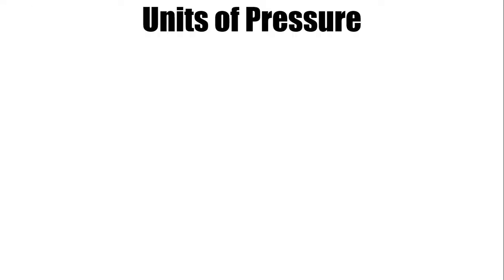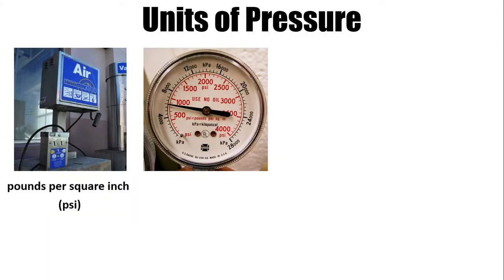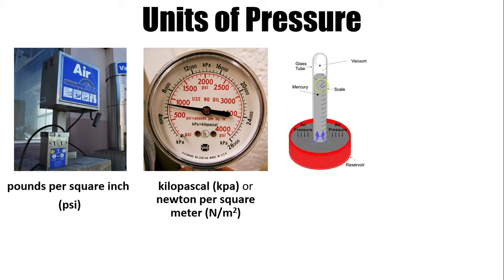Now, let's discuss the units of pressure. An old air pump in a gasoline station used the units pound per square inch, or PSI. This is widely used, especially in the United States, but its usage is supposedly discouraged. A new air pump used kilopascal, kPa, or newton per square meter. This is the SI unit for pressure.